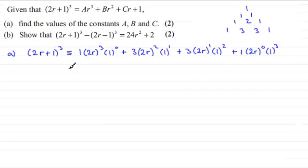Now if you tidy this up, you end up with 8r³ for the first term, the second term is 12r², then you get 6r, and then finally plus 1.